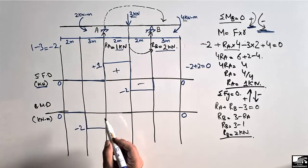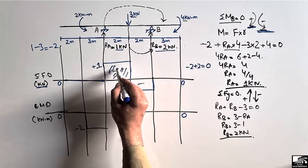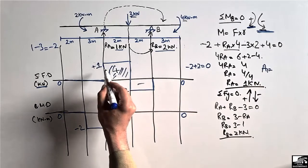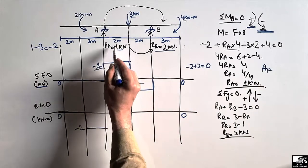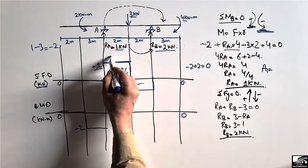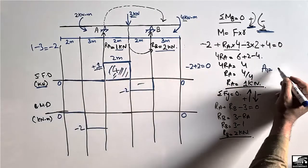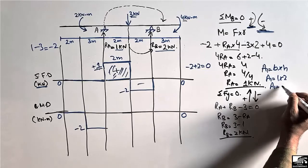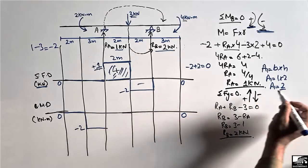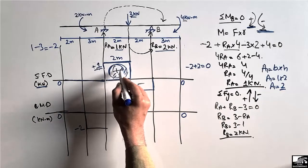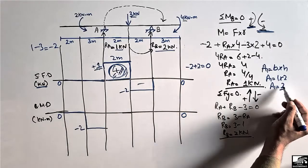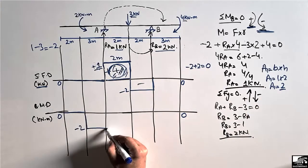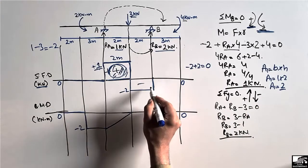There is a shear force box from A to the 3 kN load. The area of this rectangle A1 has height 1 kN and width 2 meters, giving A1 equal to 1 times 2 equals 2 kN·m. Since it is in the positive (upward) shear region, this gives plus 2. Adding minus 2 and plus 2, the bending moment returns to 0 at support A.